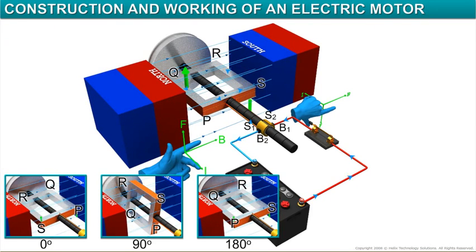When the coil rotates by more than 90 degrees, the split rings also rotate along with the coil. Now, the split ring S1 connects the end PQ of the coil to carbon brush B2. Similarly, S2 connects RS to B1.